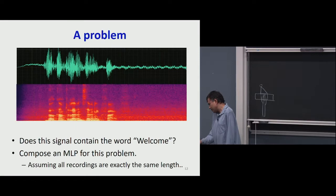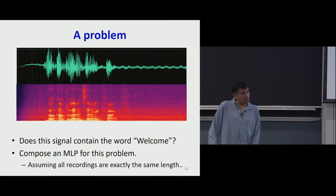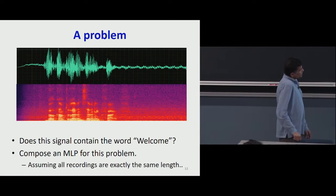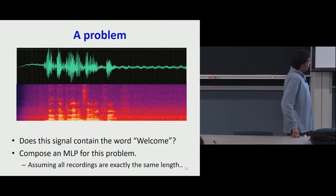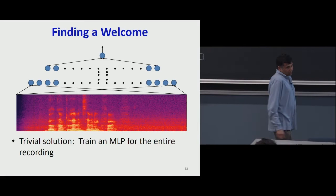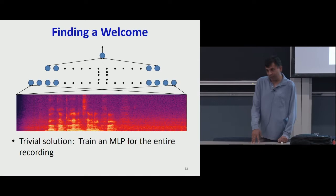Here's another problem. I give you a recording that has been converted to a sequence of vectors — a spectrographic representation. The x-axis is time, y-axis is frequency, and the color intensity at any pixel gives you the energy in the signal at that time and frequency. I ask you: does the signal include the word 'welcome'? Using the naive approach, you'd pass the entire block to a multilayer perceptron and train it to decide if the recording contains that word.